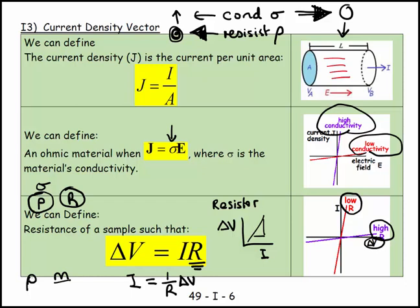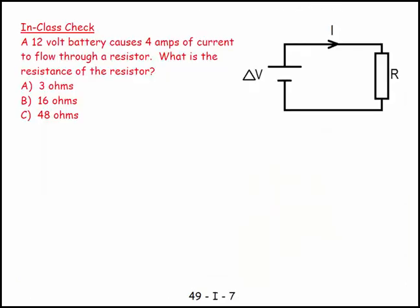Let's look at an example here. A 12-volt battery causes 4 amps of current to flow through a resistor. What is the resistance of the resistor? So what do we know? We know delta V is equal to 12 volts. And I is equal to 4 amps. And R is equal to, I don't know.